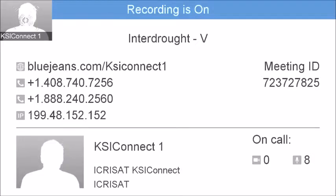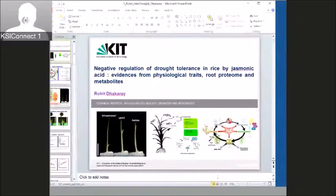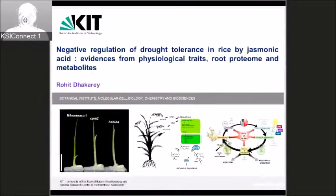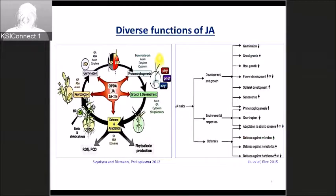Jasmonic acid is an important plant hormone which has a diverse role in overall plant development. In rice, jasmonic acid has been less studied as compared to studies done in Arabidopsis, and in particular its role in adaptation to abiotic stresses is still debatable.